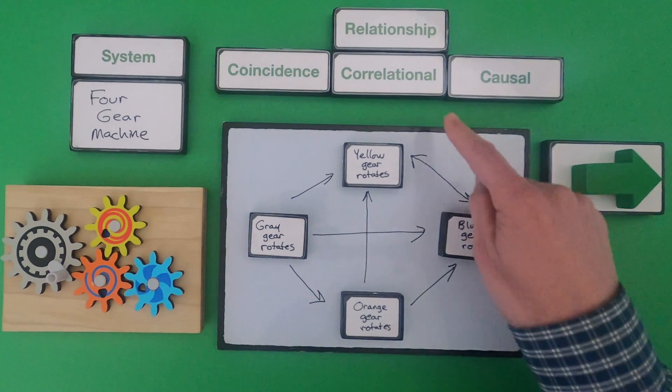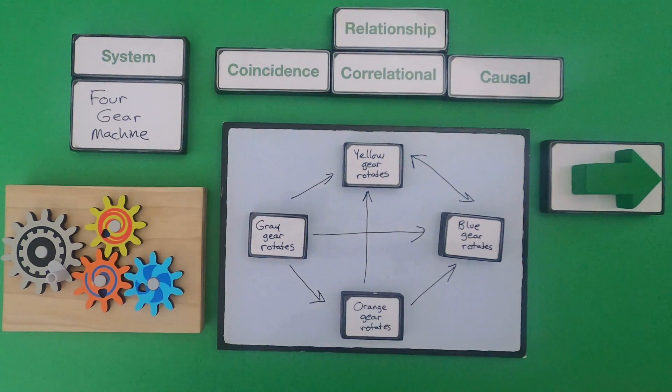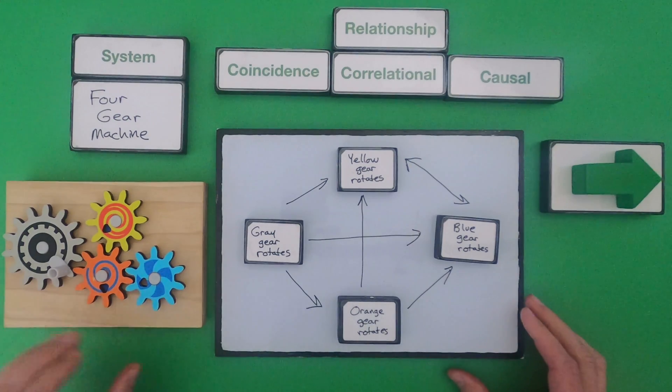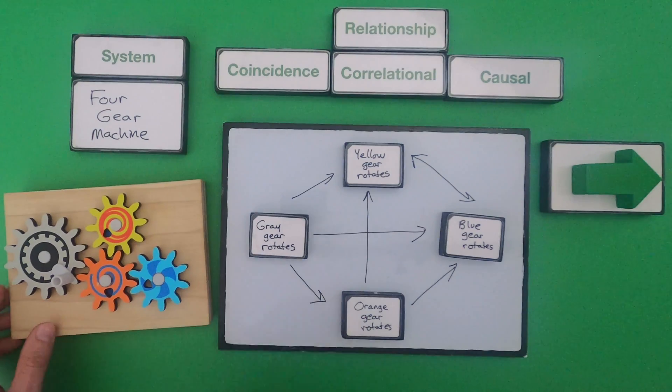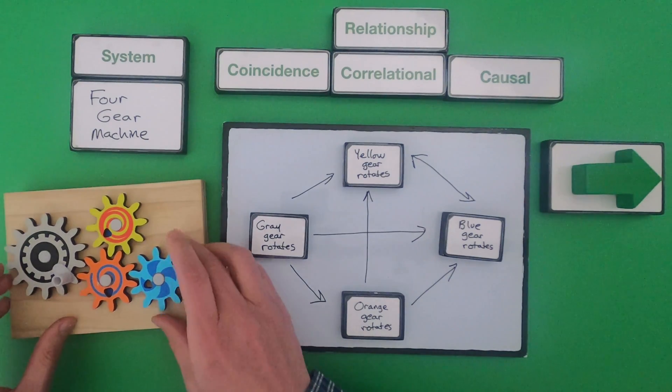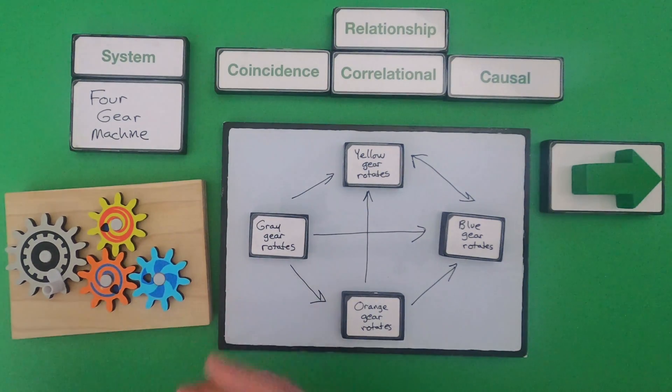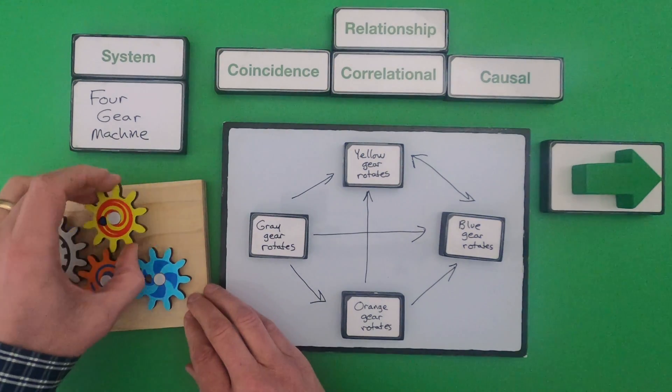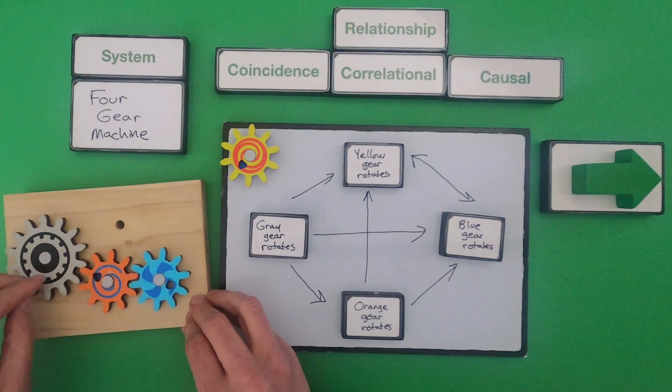And so you can see on here that I'm showing a correlation there but then a lot of causation everywhere else. So the first thing you should always do is identify what you think are the relationships. And then the next thing you have to do is experiment. We have to do some experimentation. And so I cannot remove the gray or the blue gear but I can remove the yellow gear.